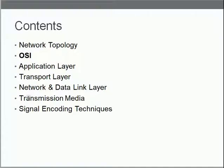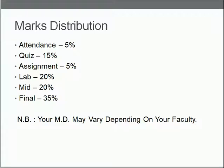You also have transmission media and signal encoding techniques, which might be skipped at the end of the semester depending on the faculty. But the OSI part is the essential foundation. As for marks distribution: quiz is 15, assignment is 5, lab is 20, not 25, and there are 5 extra marks in the final. This may vary depending on your faculty.